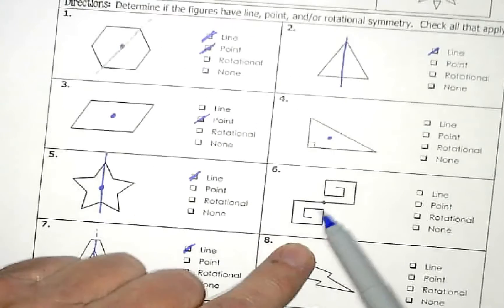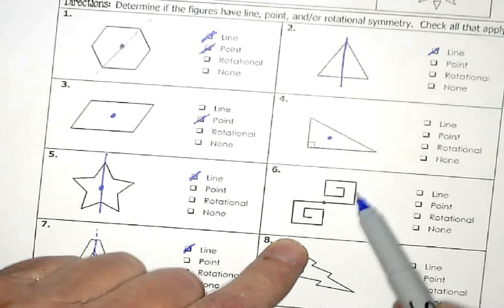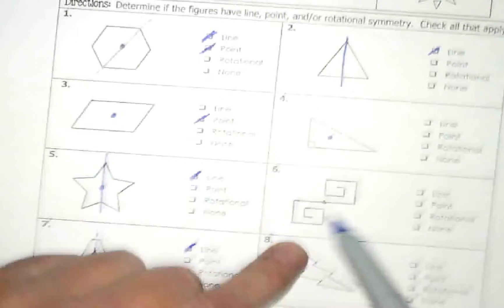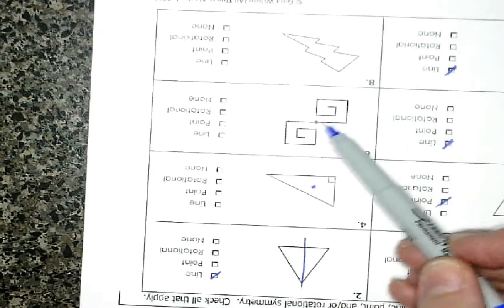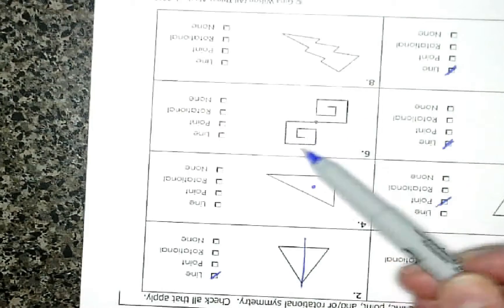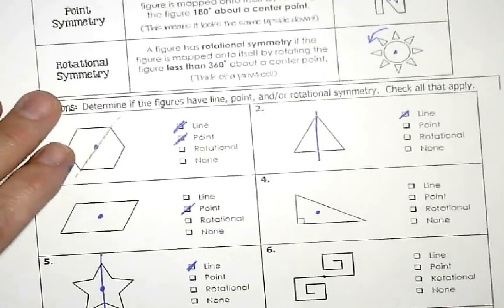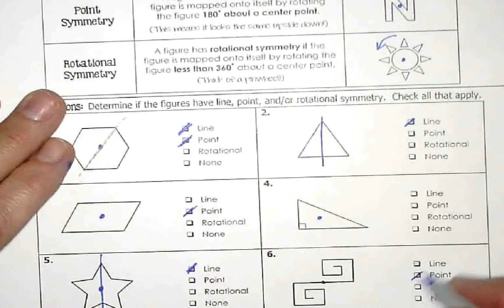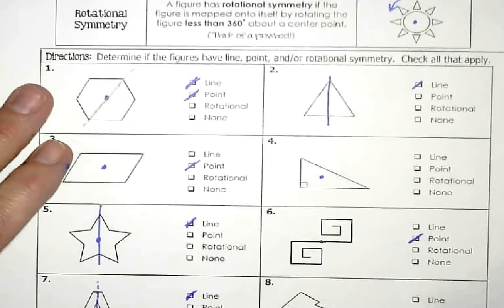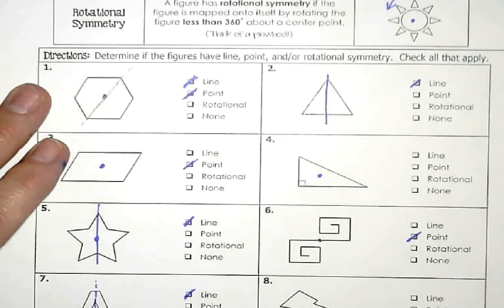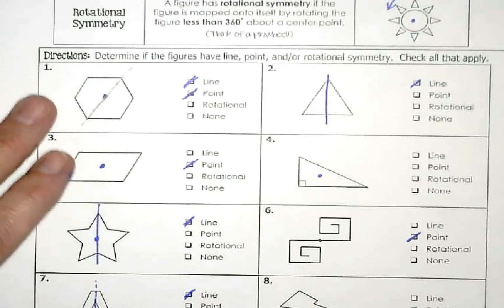Number six: I've got it up on the right and down on the left — turn it around — up on the right, down on the left. Yes, it's the same picture, so that's going to be point symmetry. The letter A and the lightning bolt shape are not point symmetry.